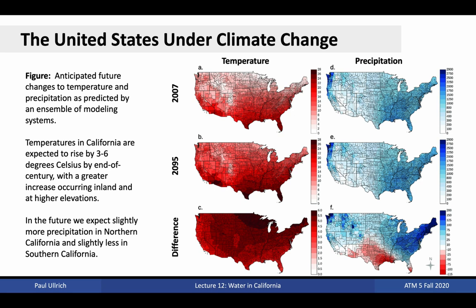Over the next century, California will need to adapt its water management strategies in the face of climate change. Anticipated changes to temperature and precipitation over the next century, as predicted by an ensemble of climate modeling systems, suggest temperatures in California will rise by 3 to 6 degrees Celsius by end of century, or 5 to 11 degrees Fahrenheit. The warmer temperatures will increase the amount of water vapor in the air and consequently drive up precipitation in the northern half of the state. The drier southern half of the state is actually expected to experience a decline in precipitation, in accordance with the well-known climate rule of thumb: wet becomes wetter and dry becomes drier.